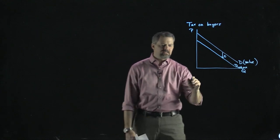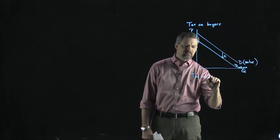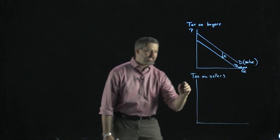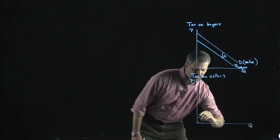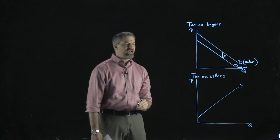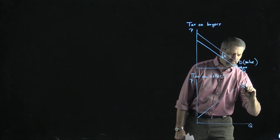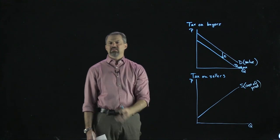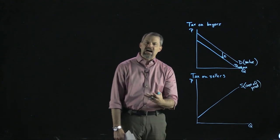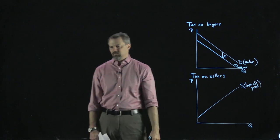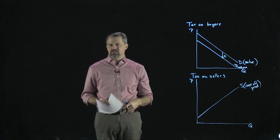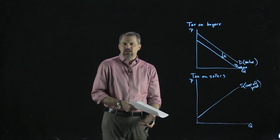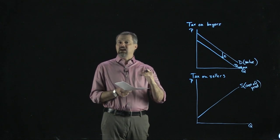A tax on sellers increases their cost of production by the amount of the tax. If we think about a price-quantity picture with a supply curve, remember that the supply curve represents cost of production. For example, suppose you're a pizza restaurant and it costs you $5 to make a pizza — covering raw materials, electricity, labor, and so on.